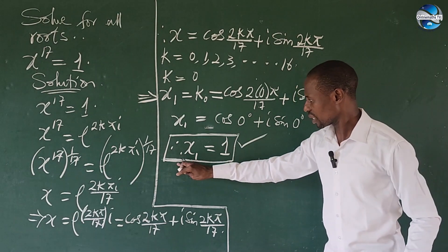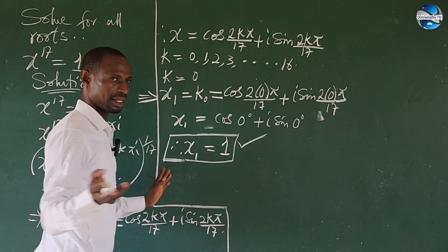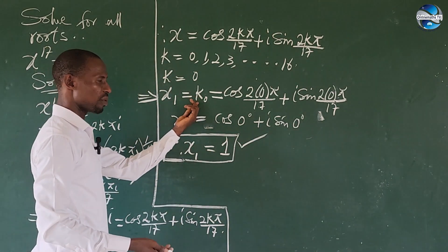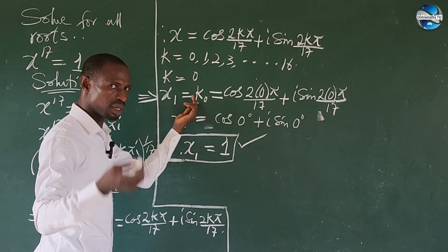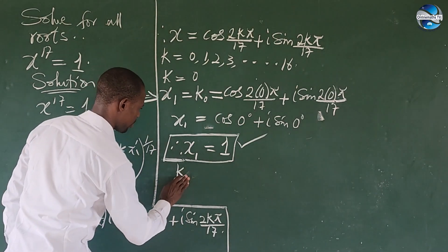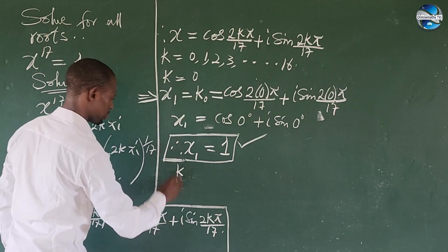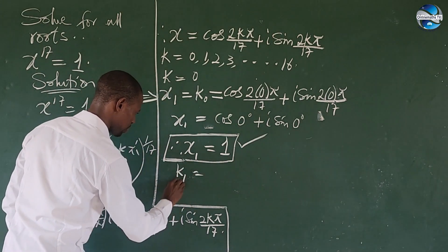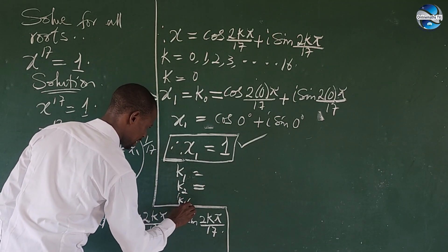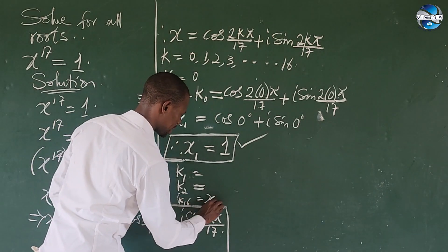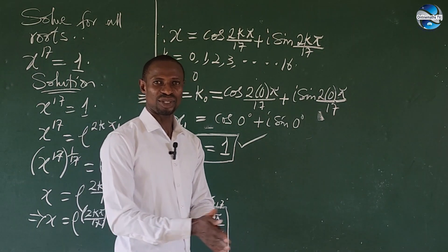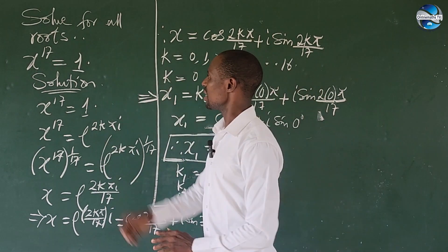So we do that for k₁, k₂, k₃, k₄, k₅, and so on. Continuing with this same pattern, we go from k₁ equivalent to x₂, k₂ equivalent to x₃, all the way to k₁₆ giving us x₁₇. That gives us the guidelines on how to solve for all 17 roots to this challenge.